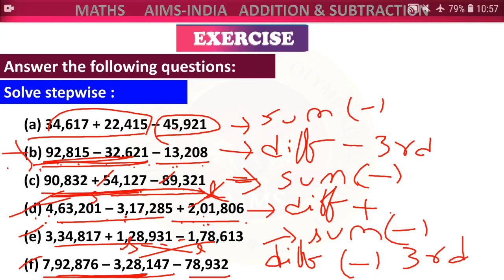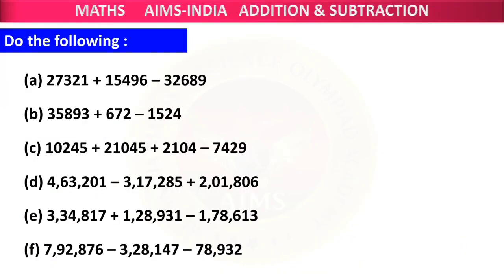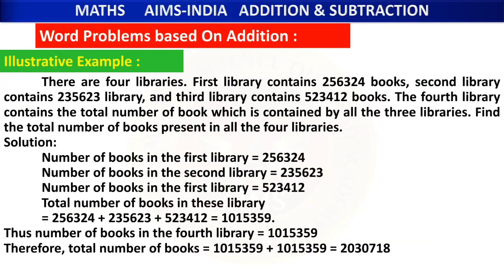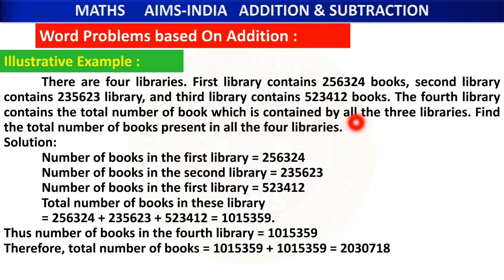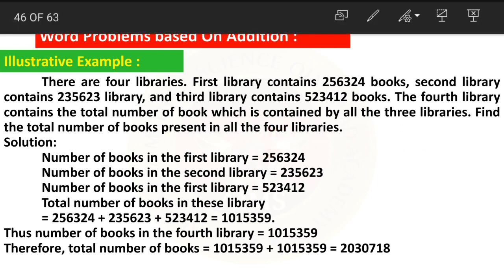If you get any question involving both addition and subtraction, you need to solve it following these steps. Coming to some word problems — we already know how to do word problems. The first one: there are four libraries. The first library contains books, the second library contains some books, and the third library also has books. The fourth library contains the total number of books of all three libraries — find the total number of books in all four libraries.